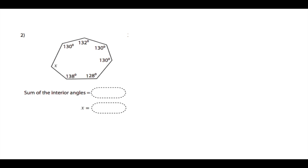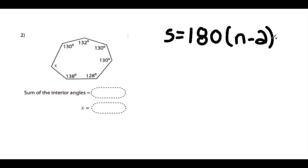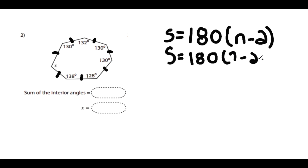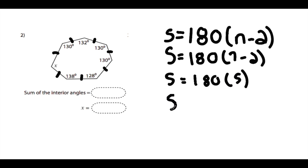Now looking at our second example, we again start with the formula S = 180 times (n minus 2), where n represents the number of sides. Our new polygon has 1, 2, 3, 4, 5, 6, 7 different sides. Substituting 7 for n: S = 180 times (7 minus 2) = 180 times 5, which equals 900 degrees. So the angle sum of this polygon is 900 degrees.